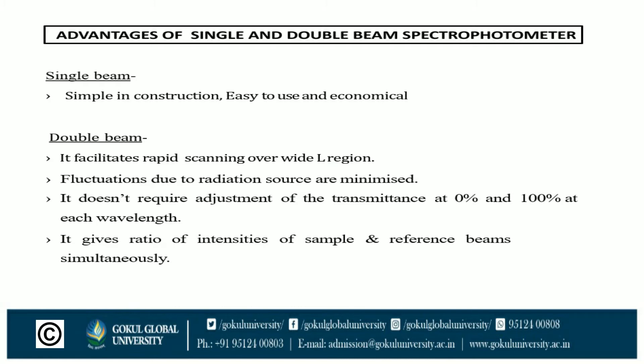The double beam does not require adjustment of the transmittance at 0% and 100% at each wavelength, whereas in the single beam, adjustment at 0% and 100% is required every time for each wavelength. The double beam gives the ratio of intensities of the sample and reference beams simultaneously, providing sample and reference results at the same time.